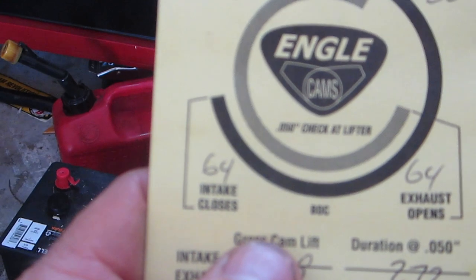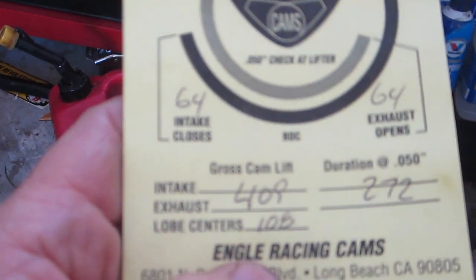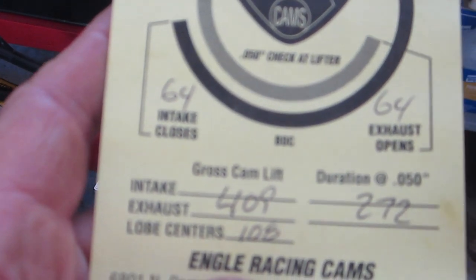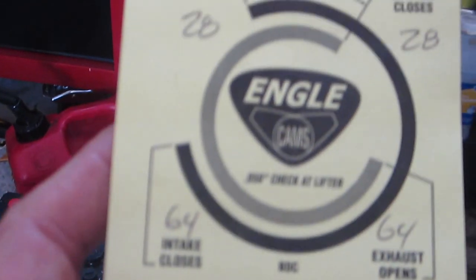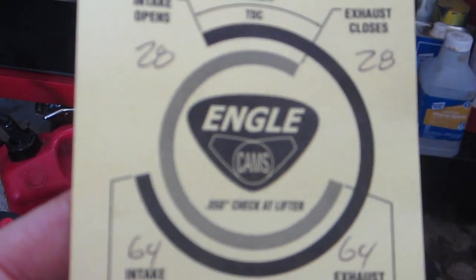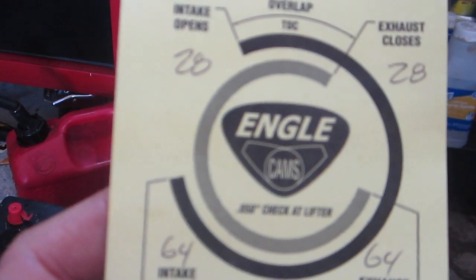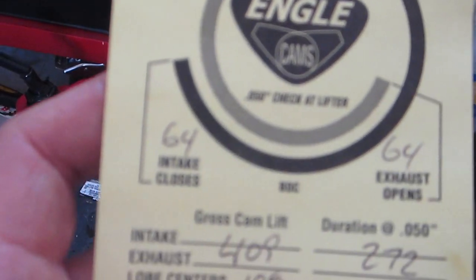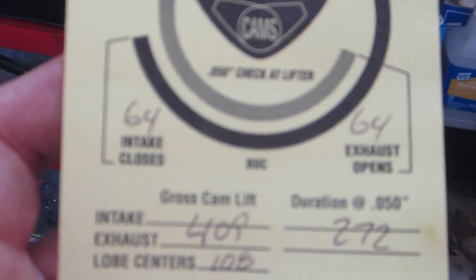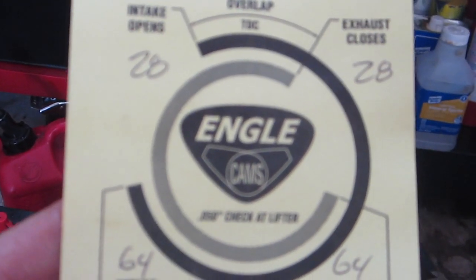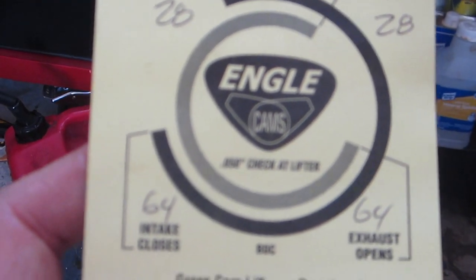Comparing that to the cam card, that matches perfectly. 64 degrees after bottom dead center. The intake is within 0.050 inches of being closed. So this is the point 0.050, point 0.050 method of checking. And as I said, I saw 27 degrees intake opens and 64 intake closes.